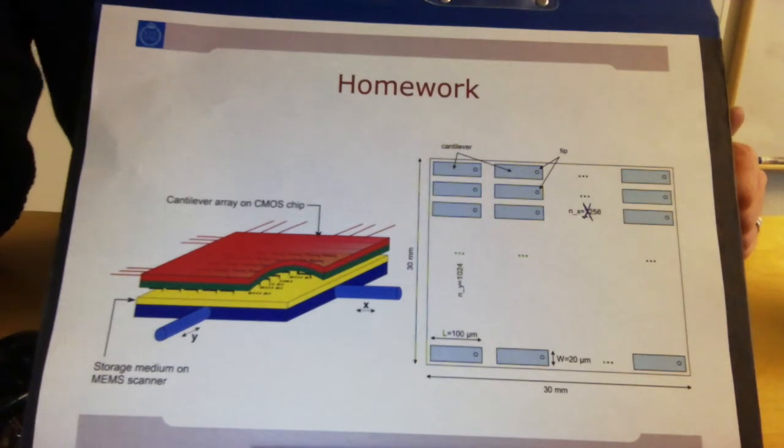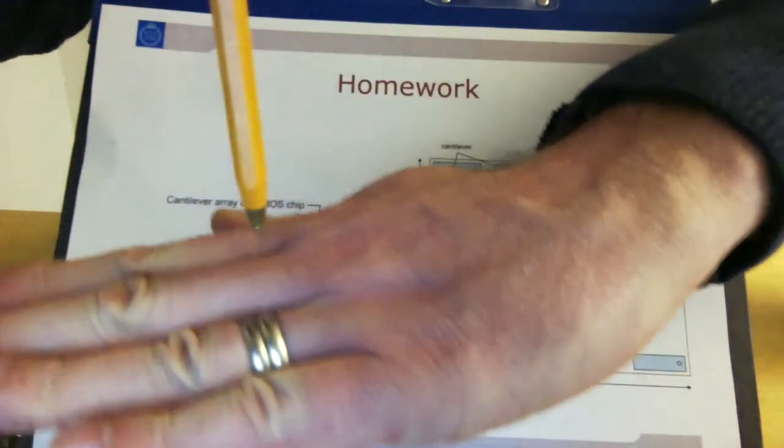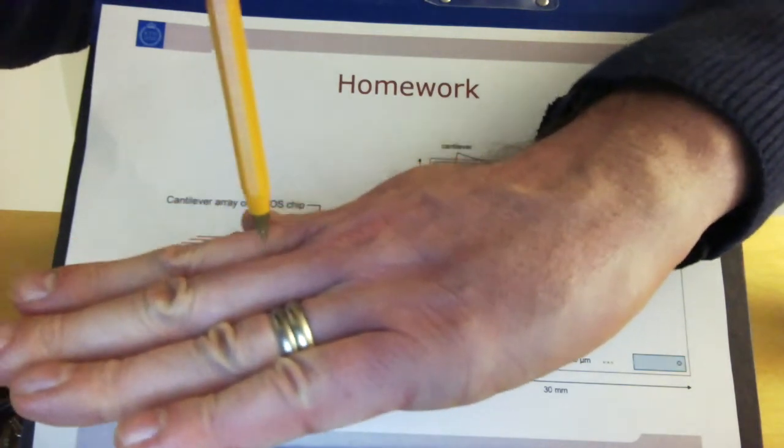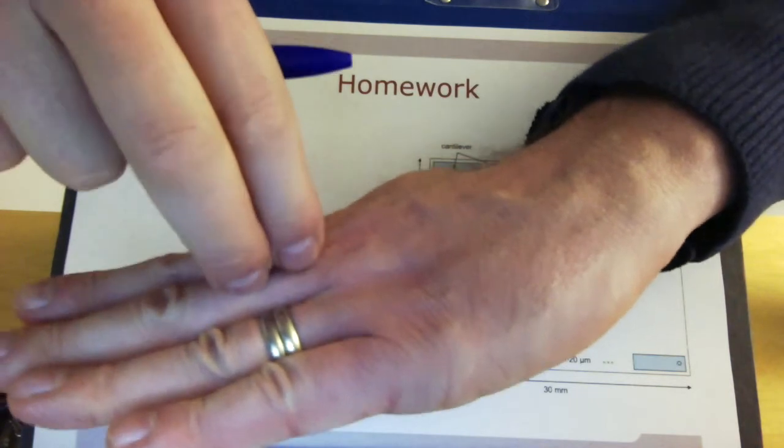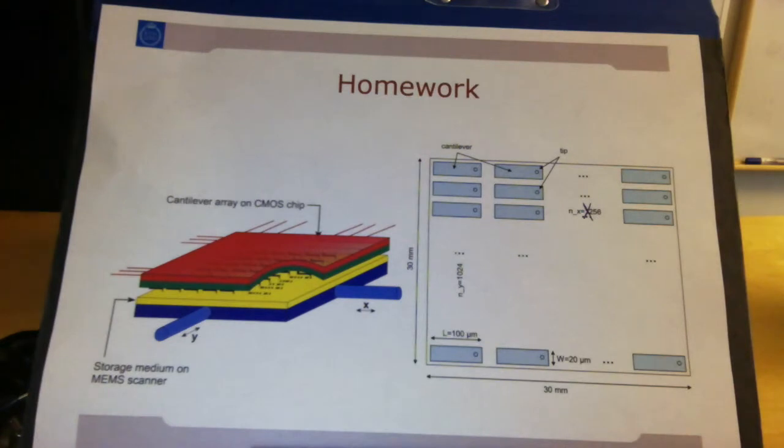We can also erase data or refresh data by going with a needle to a certain position and heating up the needle locally at the top, such that the polymer at that spot remelts. By remelting, it will close back the polymer, so when there is a hole it will close and there will be no hole anymore. In that way you can basically override it with a zero. You can change a one back to zero.